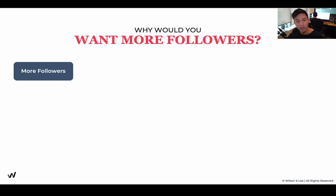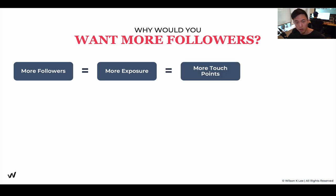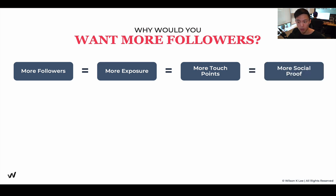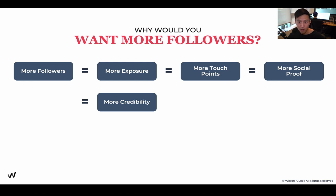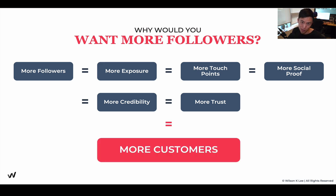Why is that even more important? The more followers you have means more exposure. More exposure means more touch points — you get to touch your customers at different cycles of their customer journey. If you don't understand what the customer journey is, go back to previous modules. Being able to touch them at multiple touch points means more social proof, more people talking about you, more testimonials, more credibility, and ultimately more trust. Trust is the only reason why someone buys from you — and hence, you get more customers. More followers converts someone who just stalks you on their phone into someone who actually comes and buys from you all the time.